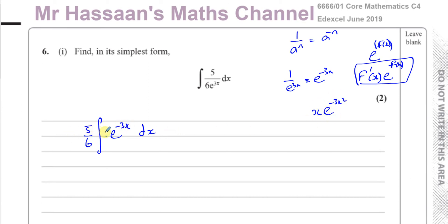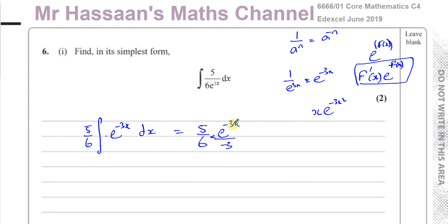In this particular case, I have a constant times e to the power of minus 3x. If I differentiate what's inside, I get minus 3, which is the same order as the constant outside. So I can integrate this. To integrate e to the power of something, it just stays the same. So it's e to the power of minus 3x, divided by the differential of what's inside, which is minus 3. That gives 5 over 6 times e to the power of minus 3x over minus 3, plus c. That simplifies to minus 5 over 18 times e to the power of minus 3x plus c.